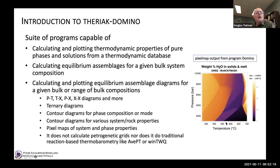Theriak-Domino also produces XX diagrams — for example, a diagram with a range of iron number on one axis and a range of aluminum content on another at fixed pressure and temperature. It calculates ternary diagrams — not compatibility diagrams or AFM projections, but ternary equilibrium assemblage diagrams or ternary pseudo sections. Not only can it calculate the equilibrium assemblage, but you can also contour the diagrams for modal abundance of phases, compositional variability of phases, and system properties.